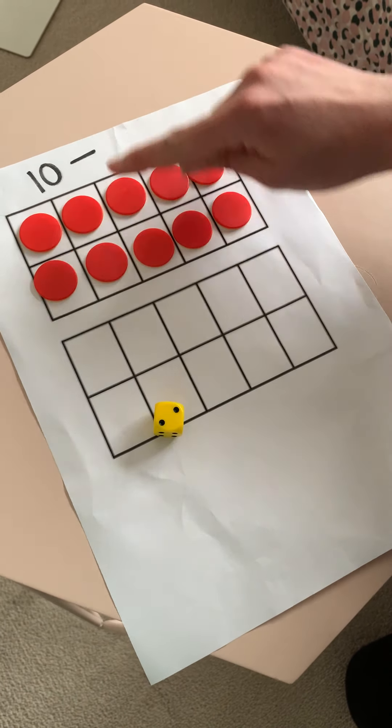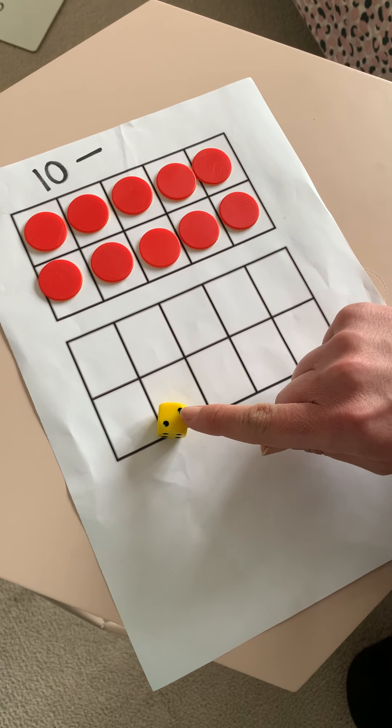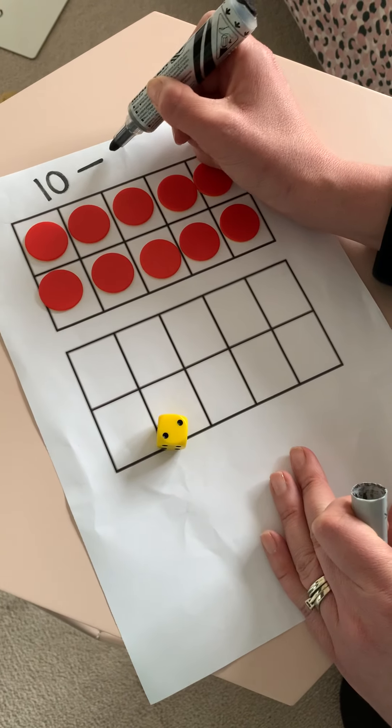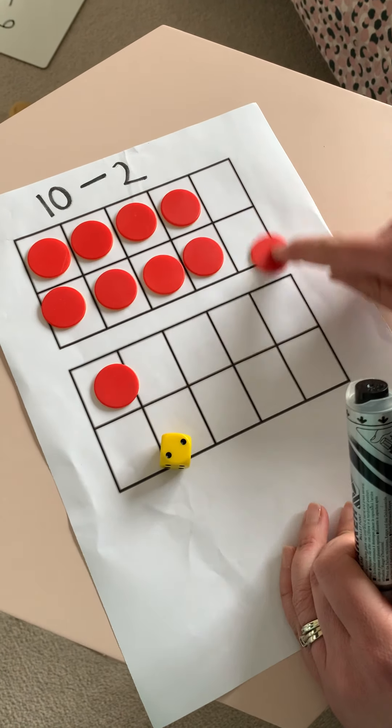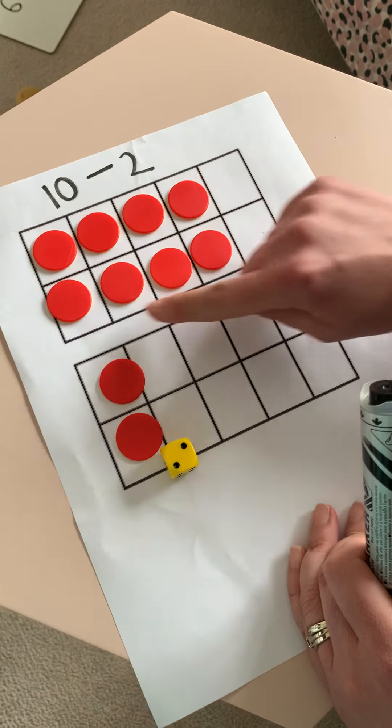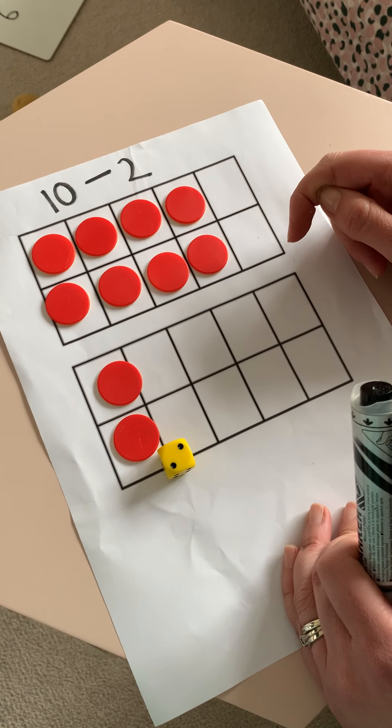So we've got 10, take away 1, 2. That's right, we're going to do 10, take away 2. So I'm going to take away 1, 2. And here will tell us our answer, how many we've got left.